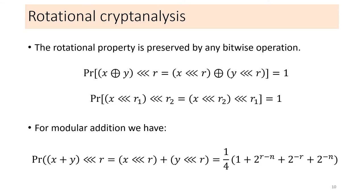Rotational cryptanalysis is a probabilistic attack usually applied to ARX ciphers. It is easy to see that the rotational property holds for any bitwise operation. The attack relies on the fact that the rotational probability after XOR or rotation is 1, while this is not the case for modular addition. Therefore, the rotational probability after several such operations will depend only on the modular additions.